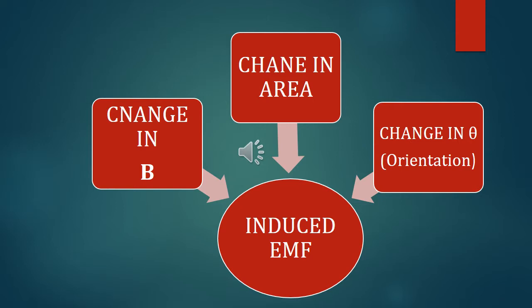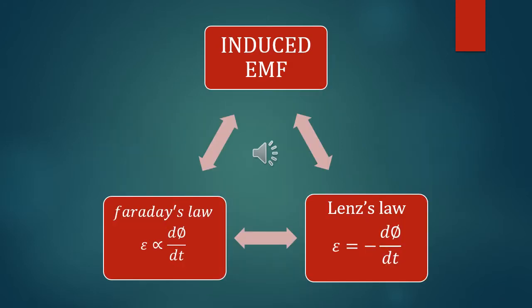The induced EMF in a coil is directly proportional to the rate of change of flux. This is called Faraday's law. The induced EMF in a coil always opposes the change in flux. This is called Lenz's law.